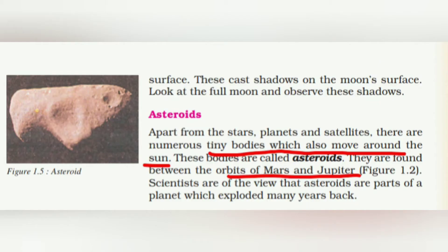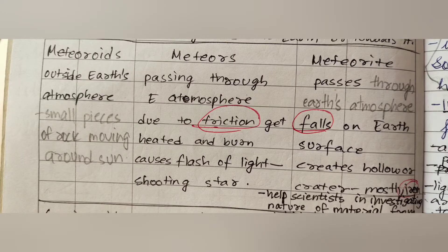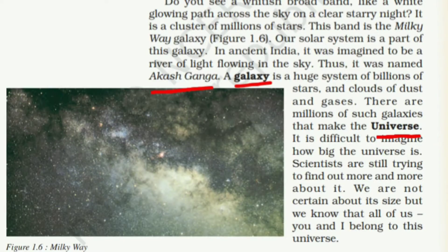Asteroids are tiny bodies orbiting the sun, found between the orbits of Mars and Jupiter. Ceres is the largest asteroid. Meteoroids are small pieces of rock moving around the sun. Meteorite passes through Earth's atmosphere and falls on Earth's surface, creating a hollow crater. Meteors are the naked-eye phenomenon — the shooting stars we know about.